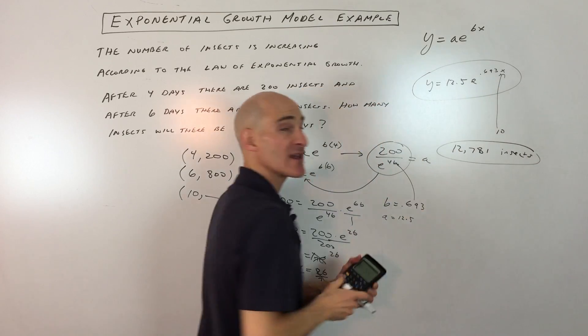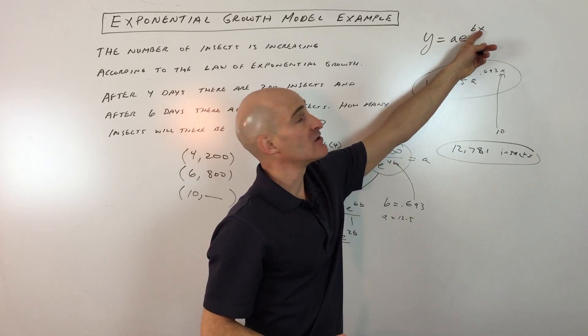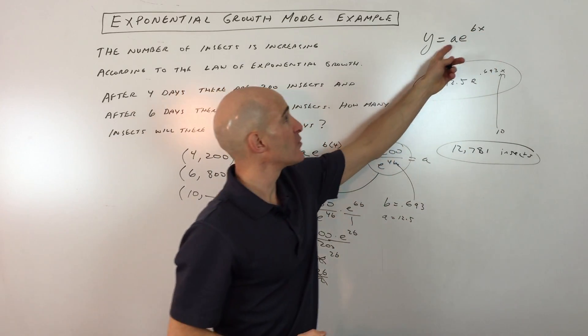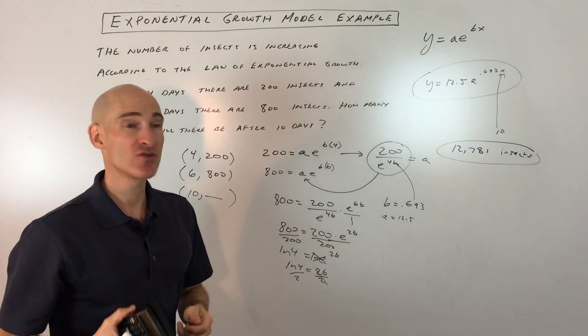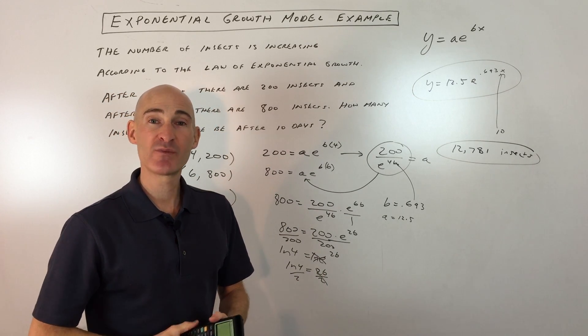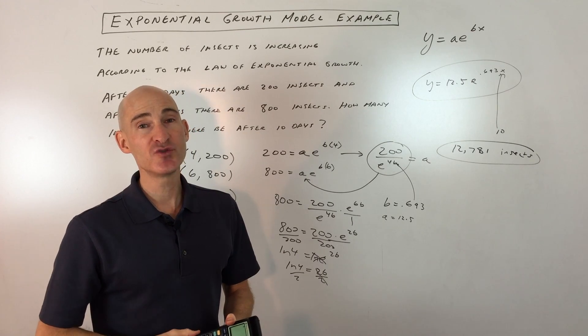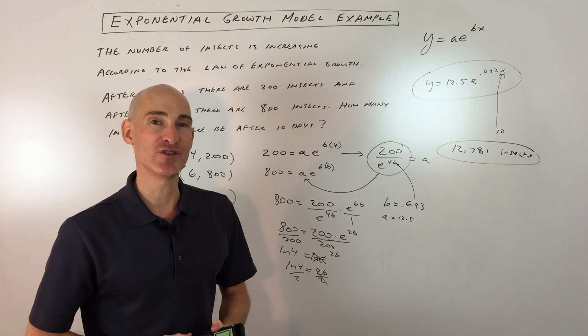That's the exponential growth model: y equals a times e to the bx. You have two variables, a and b, so you need two equations to solve that system. I hope this video helped you understand how to work with this better. Subscribe to the channel and check out more math videos on Mario's Math Tutoring YouTube channel. I look forward to seeing you in future videos.